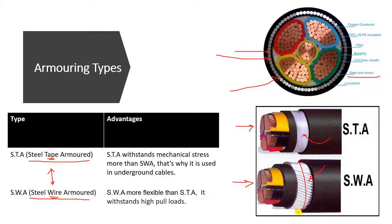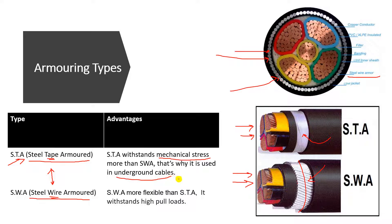Now, when to use each type: the steel tape armored can withstand high mechanical stress, greater than the wire armored. That's why usually in underground cables we use the steel tape armored, because it can withstand the mechanical stress when it is buried under the ground.